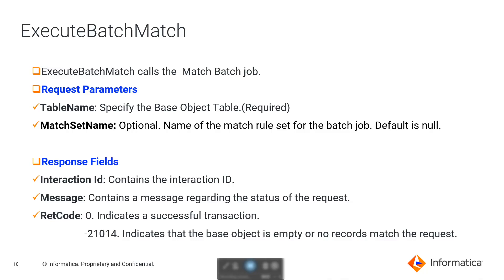The next API we have is ExecuteBatchMatch. This API calls the match batch job. From the request parameters, we can see that we need to provide table name, which is the BaseObject table name and which is a required field. We also have another parameter which is match-set name — this is the name of the match rule set for the batch job. By default it is null and this is an optional field. From the response fields, we'll get interaction ID, message, and return code. A return code of 0 indicates a successful transaction.